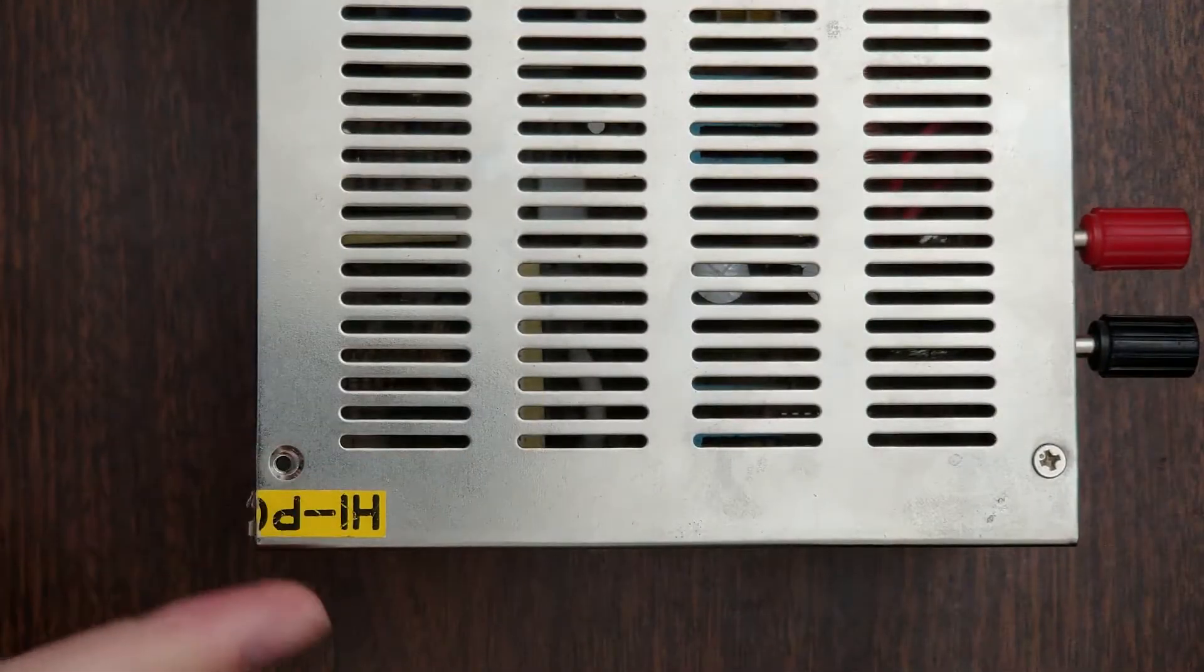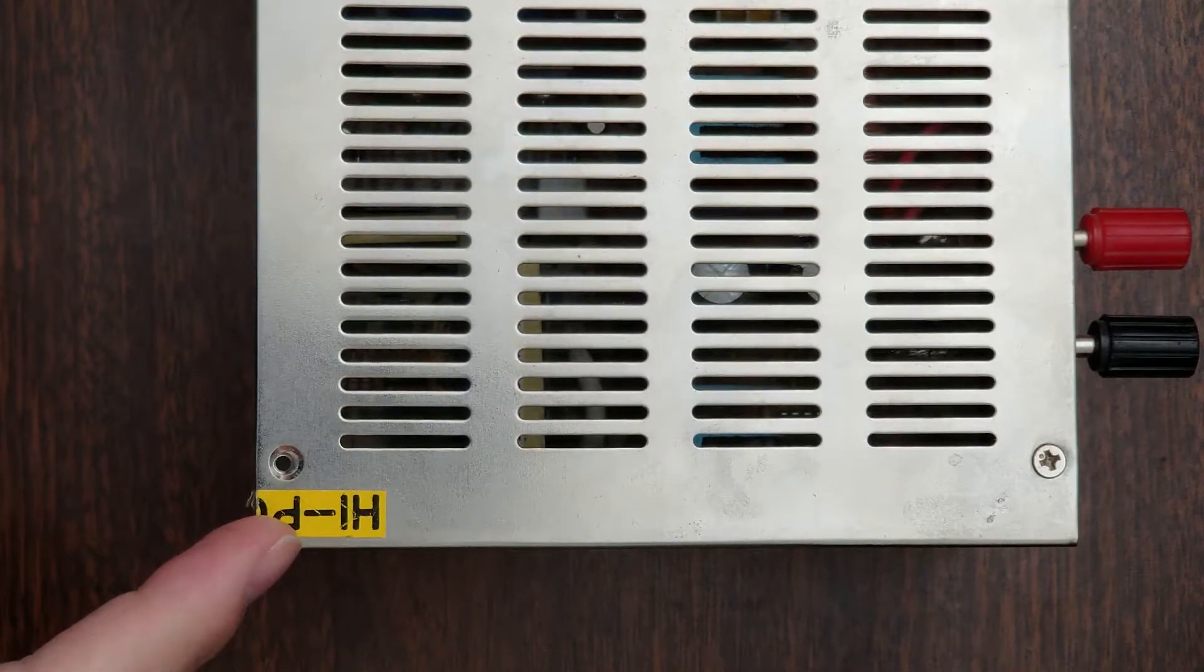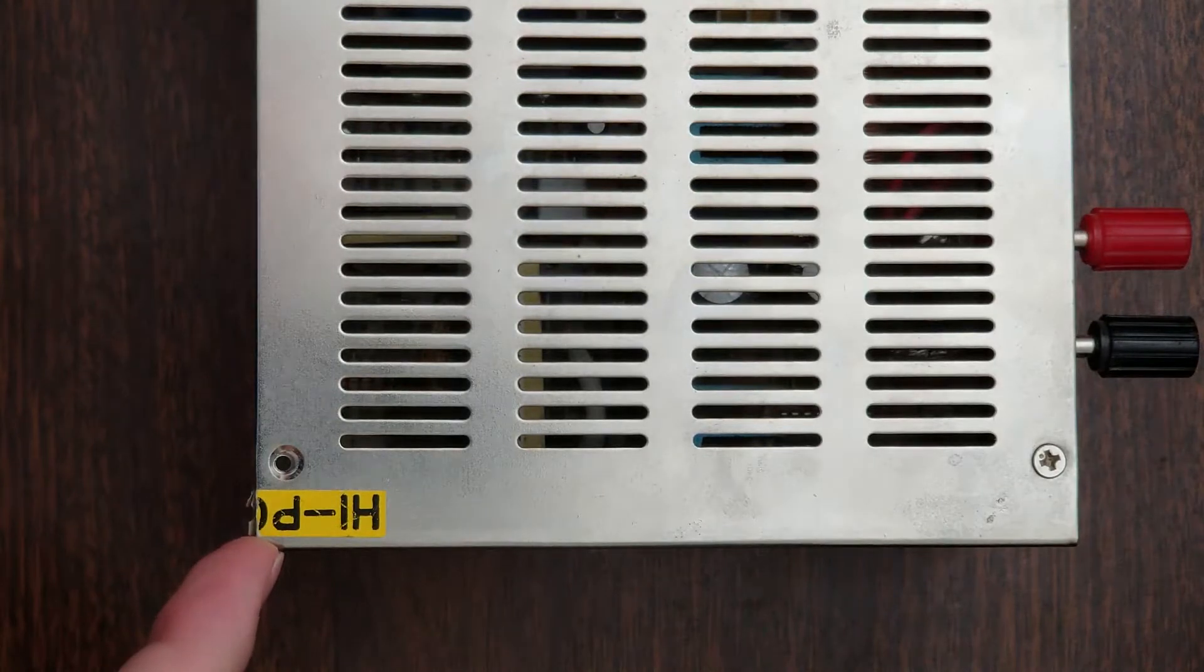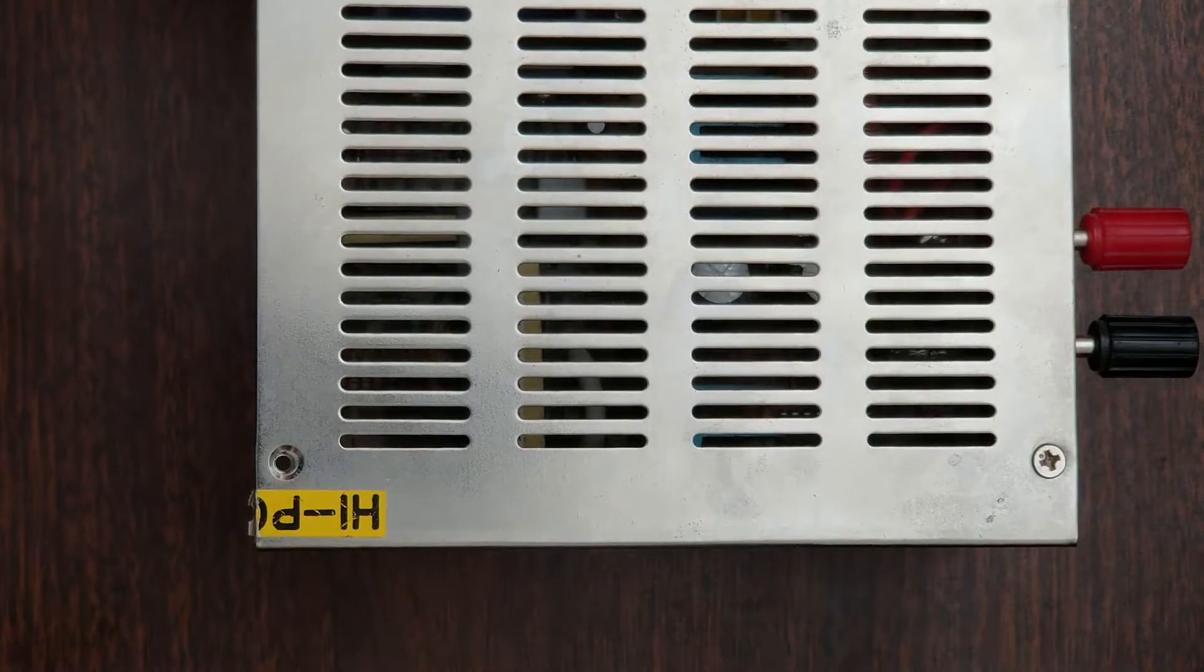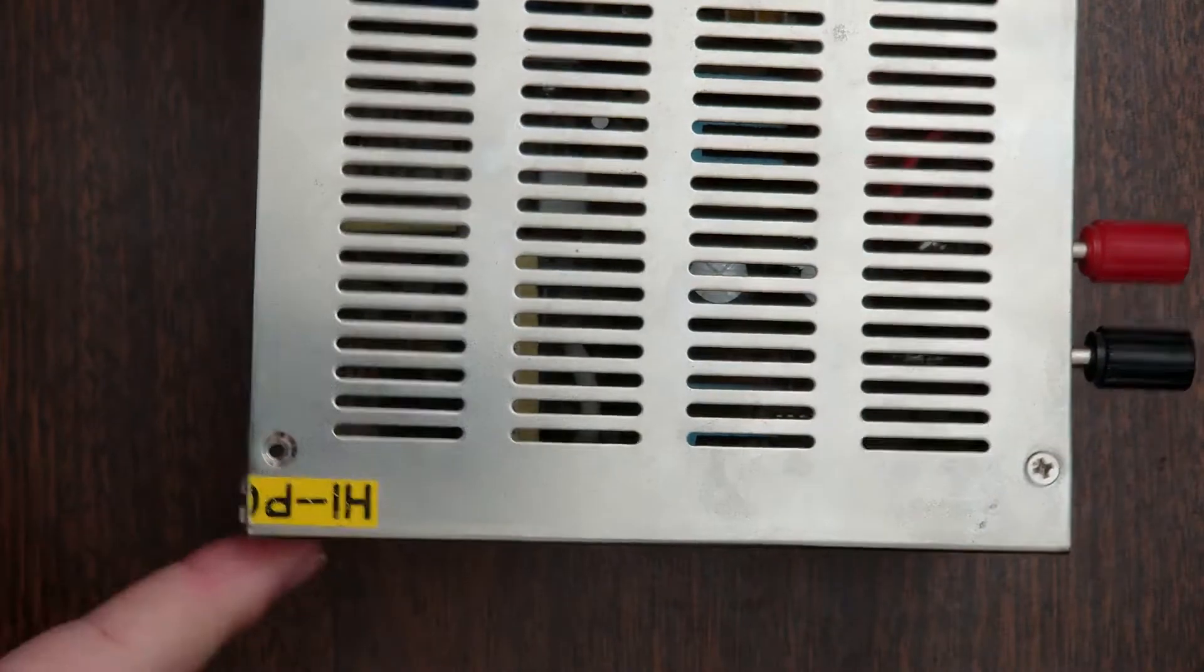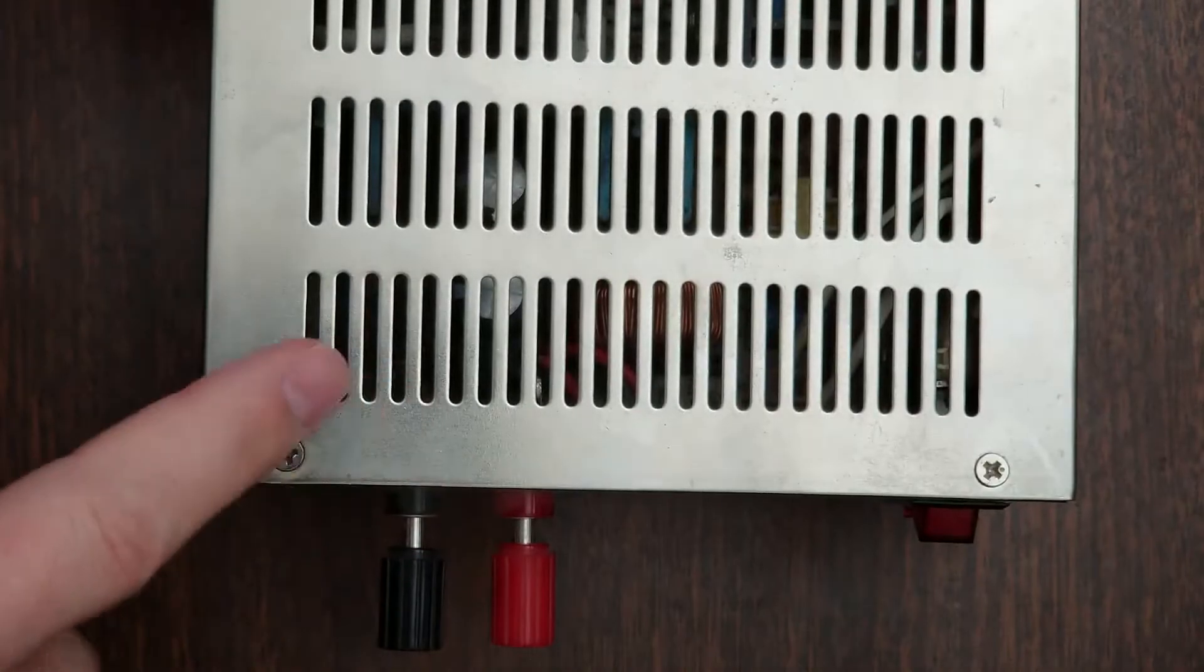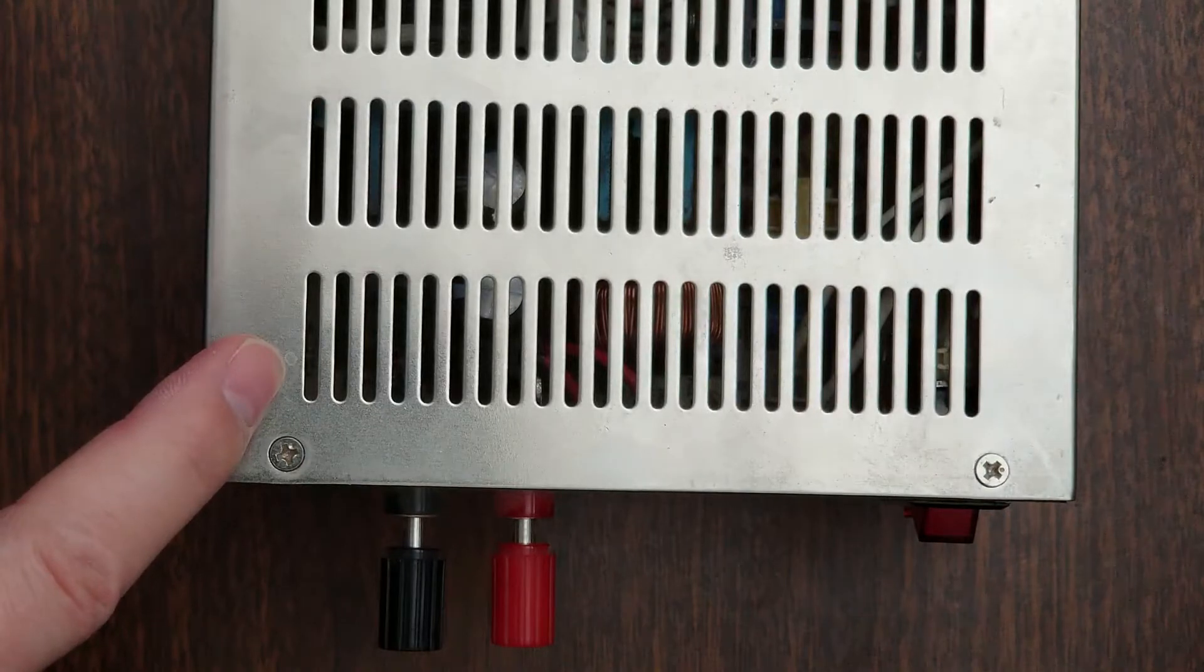But before I do that, I just want to note this sticker that says high potential or high pot or high potted. This is basically just saying hey, be aware there is dangerous high voltage inside this. So be careful when you're working on electronics, especially when there's high voltages involved.